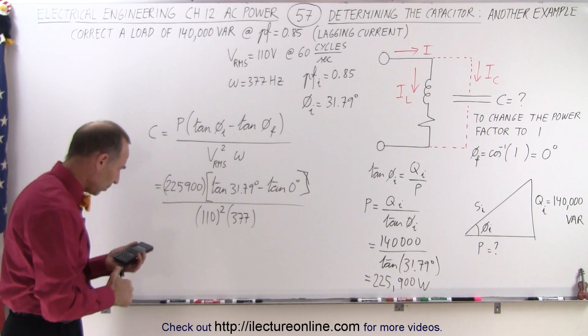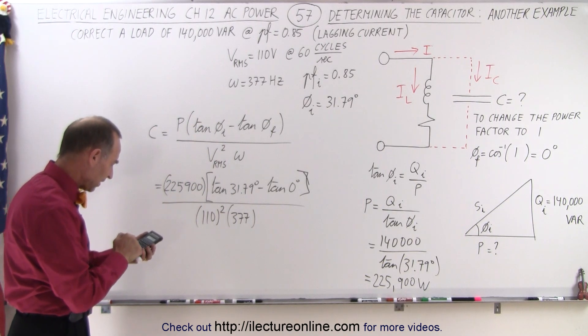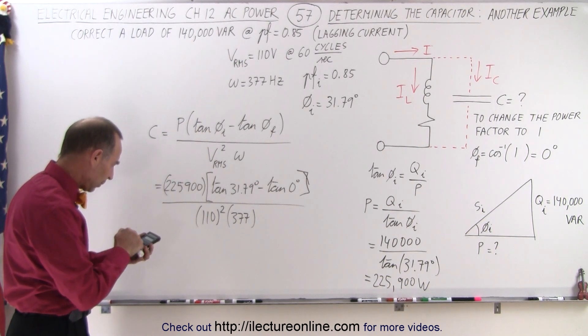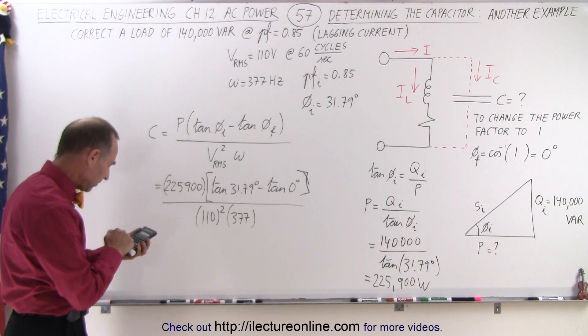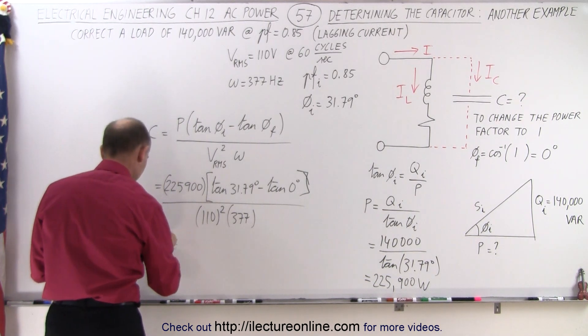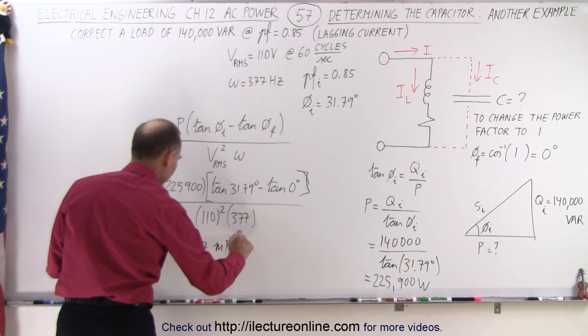All right, so multiply this times 31.79, take the tangent of that, divide by 110 squared, and divide by 377. That gives us a capacitor equal to 30.7 millifarads.